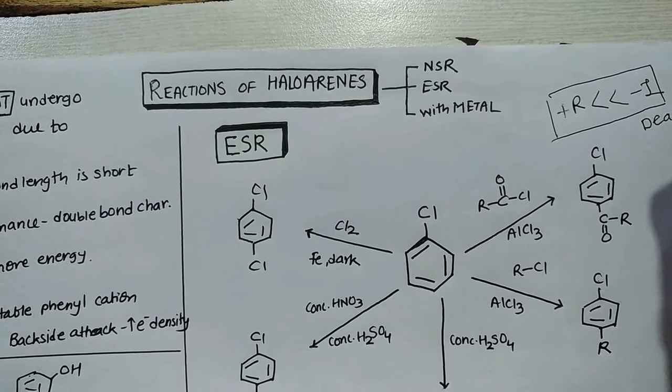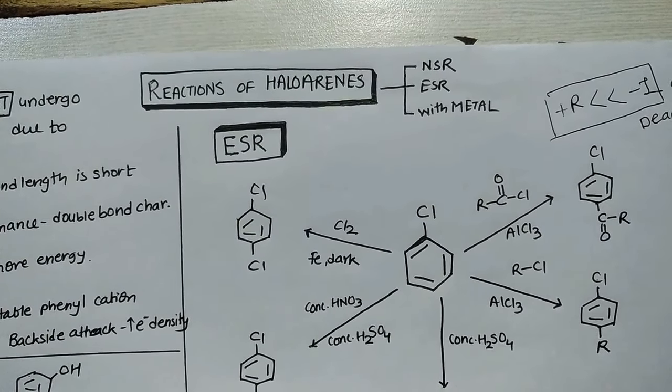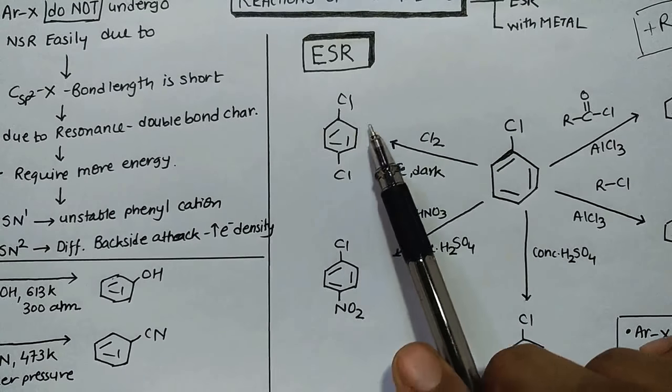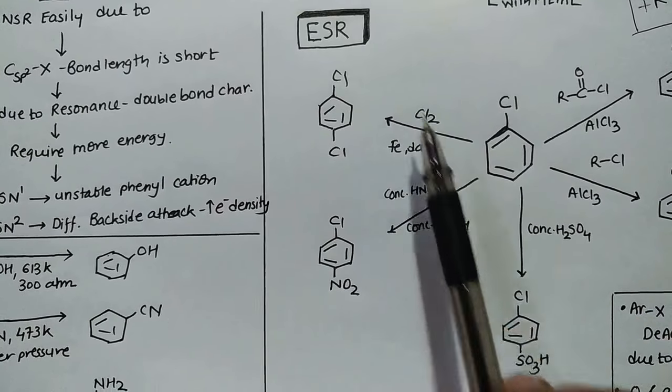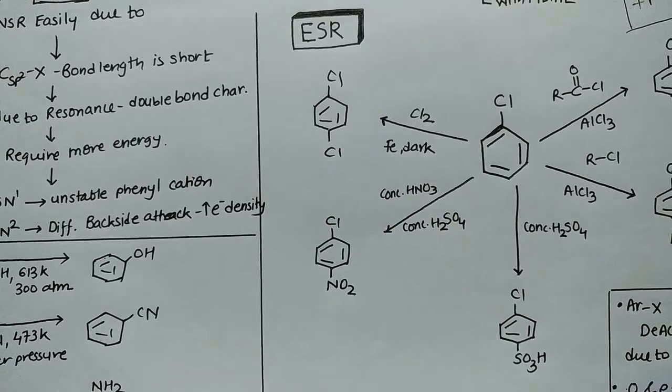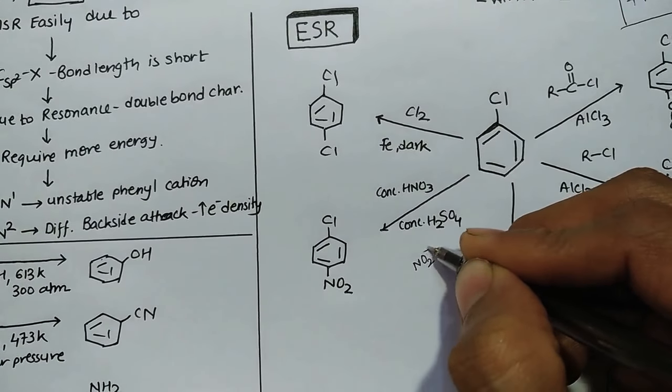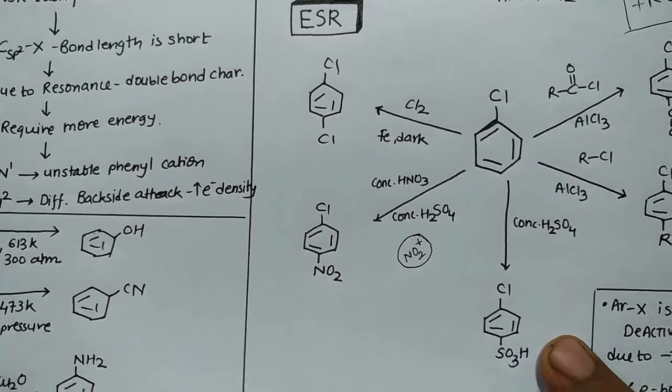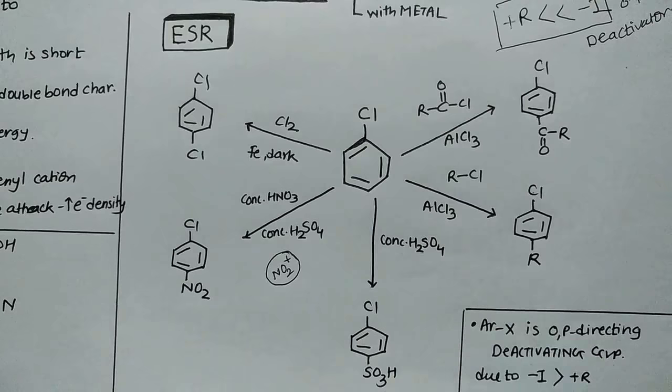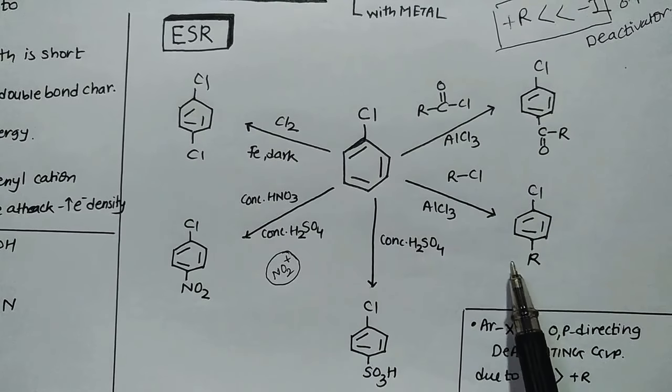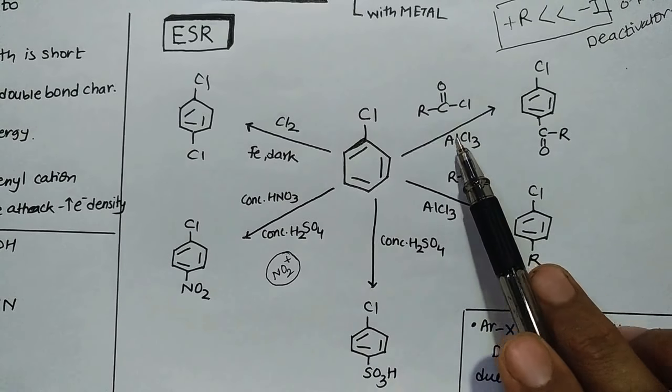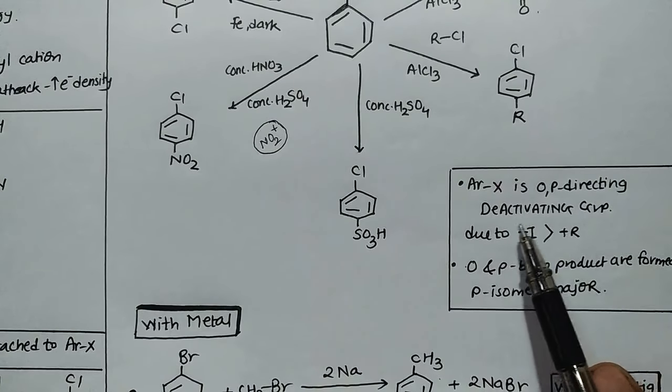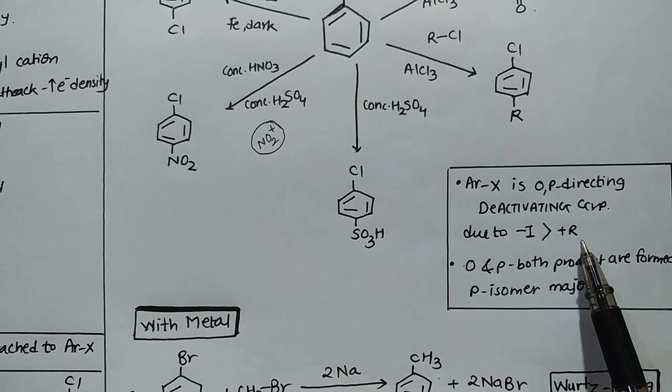It is ortho-para director but still a deactivator category. So chlorination will occur at both ortho and para positions but para will be major product. Same way in nitration you have to take nitrating mixture and NO2+ will be the electrophile. This is sulfonation where para position gets sulfonyl group. This is Friedel-Crafts alkylation where para position gets alkyl group, and this is Friedel-Crafts acylation where para position gets acyl group. This is what we were discussing - aryl halide is ortho-para director and deactivating group due to minus I effect being much greater than plus R effect.